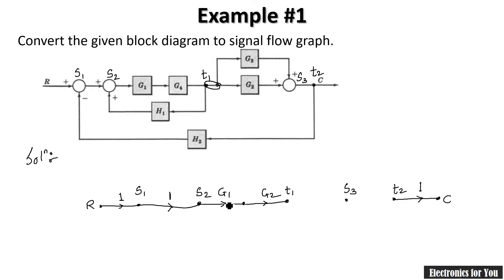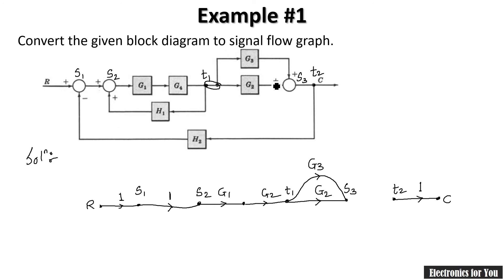Two consecutive branch gains multiply each other — this is the multiplication rule of the signal flow graph. Between T1 and S3 there is a block G2, and one more block G3 is also connected. Both G2 and G3 are positive, so I keep them positive. Between S3 and T2 there is a connection but no transfer function, so the gain is one.